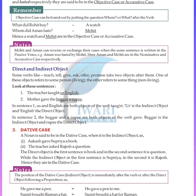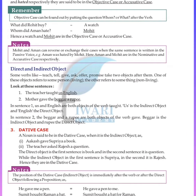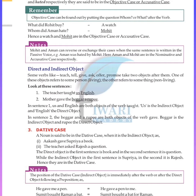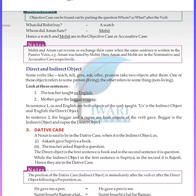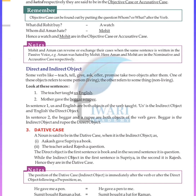Mohit and Amun can reverse or exchange their case when the same sentence is written in the passive voice. For example: Amun was hated by Mohit. This is a passive voice example. Here Amun and Mohit are in the nominative and accusative case respectively.